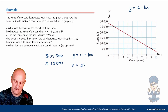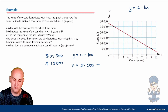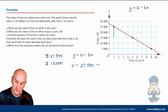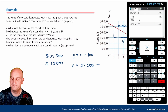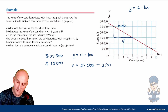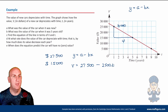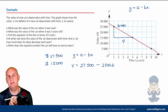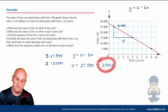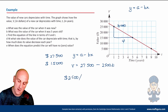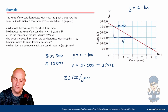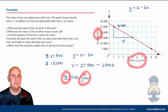To find the gradient, I draw a right-angle triangle. The car dropped $10,000 in four years, so gradient = 10,000 ÷ 4 = $2500. The equation is v = 27,500 − 2500t. At what rate does the car depreciate? It depreciates at $2500 per year — I don't need the minus sign because 'depreciate' already tells us it's going down. The units are dollars per year, from the axis labels.